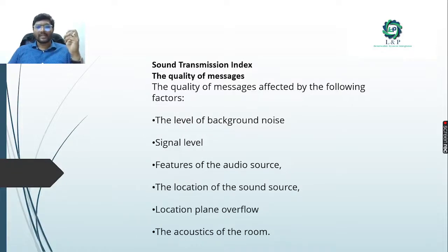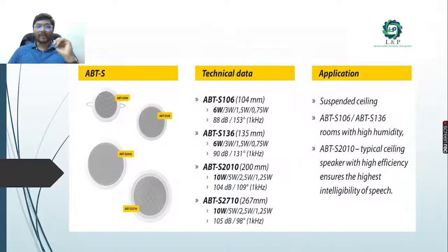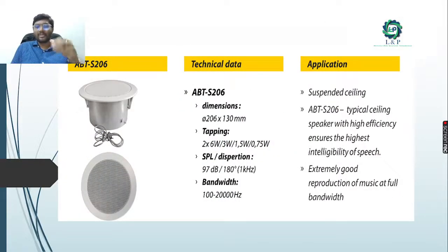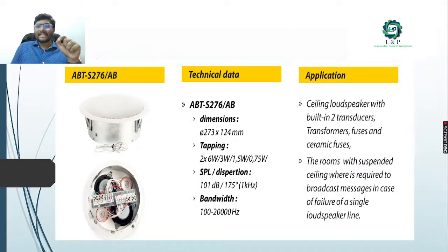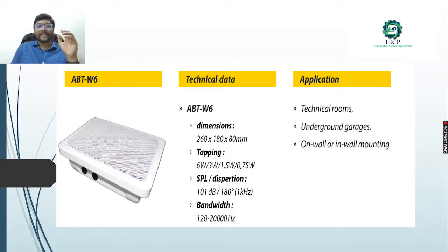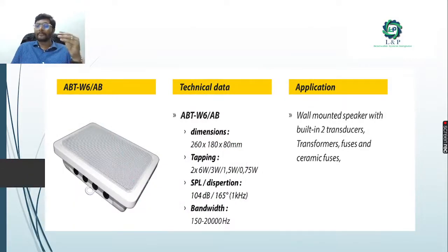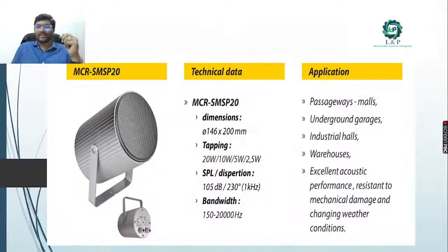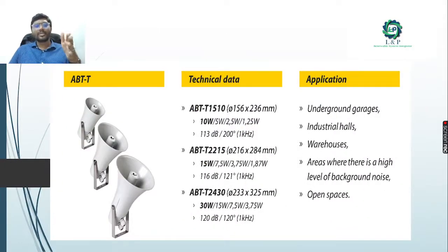The sound transmission index quality is affected by: level of background noise, signal level, features of the audio source, location of the sound source, and the acoustics of the room. Suspended ceiling speakers are commonly used for PAVA systems. There are ceiling loudspeakers with inbuilt dual transducers, transformers, fuses, and ceramic elements - used in technical rooms, underground garages, and recessed mountings. Volume speakers with similar components are used in passageways, malls, underground garages, industrial halls, and warehouses.